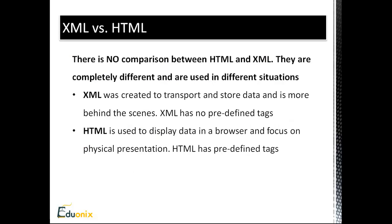XML vs HTML - there's really no comparison because they are completely different and do completely different things. XML is a data interchange format - a way to structure, store, and transport data. It doesn't display anything. HTML was created to display data in a browser and focuses on the physical aspects of a web page. HTML has predefined tags like paragraph, headings, and image tags, while with XML you create your own tags.